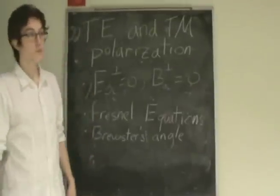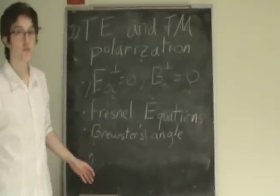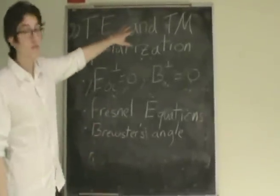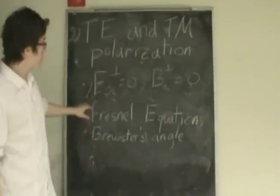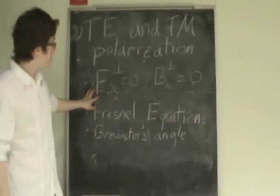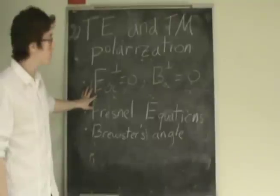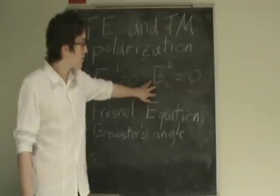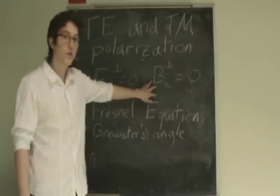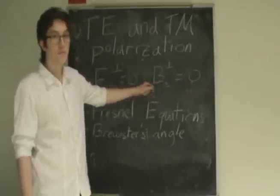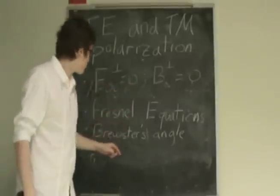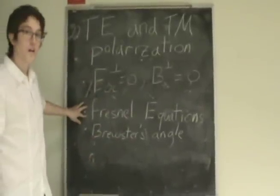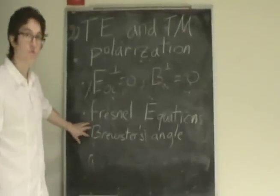Today we're going to talk about two different kinds of polarizations in electromagnetic waves: the transverse electric and the transverse magnetic polarizations. The first case is when the incoming electric perpendicular part of the wave is equal to zero, while the second case is when the incoming perpendicular magnetic part of the wave is equal to zero, or the parallel electric part is equal to zero. From that, we will derive the Fresnel equations, and finally we'll see one application: Brewster's angle.